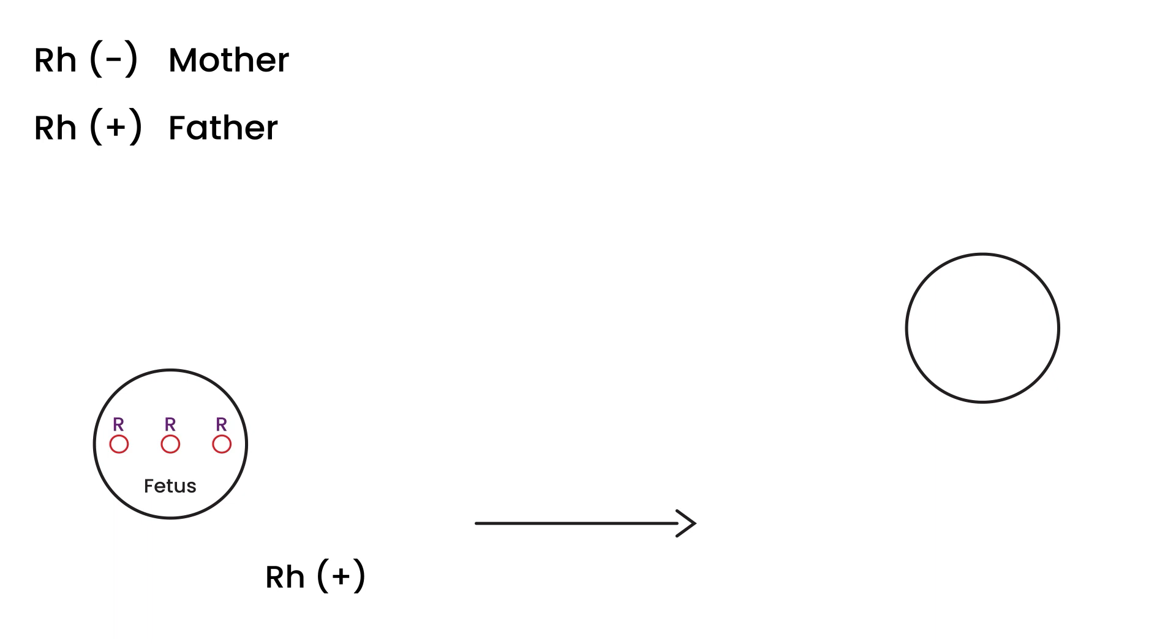This can happen throughout the pregnancy. When that happens, it can lead to some serious problems because the mother's body can then produce anti-Rh antibodies against these fetal red blood cells. The good news is that nothing bad happens in this first pregnancy.